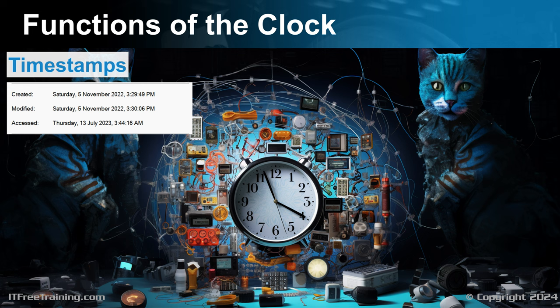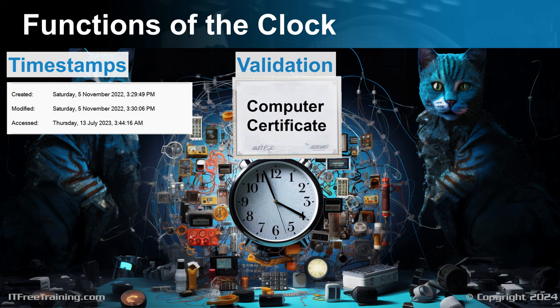A clock is also used for validation, for example when accessing secure websites and logins to services like Windows Domain. If you find you can't authenticate, it may be that the time is set incorrectly. In Windows, if the time is out by more than five minutes, you won't be able to log in.